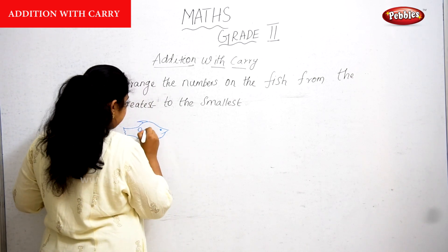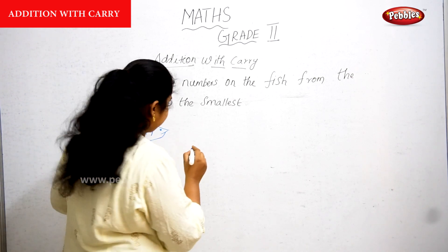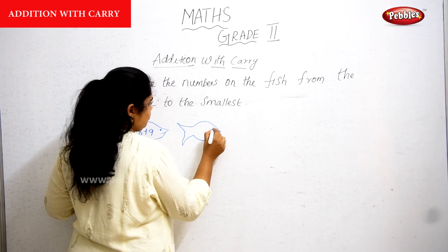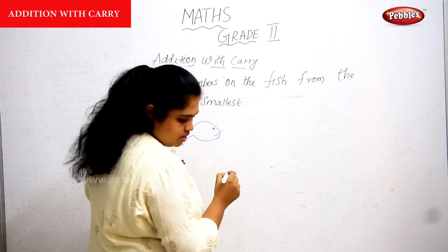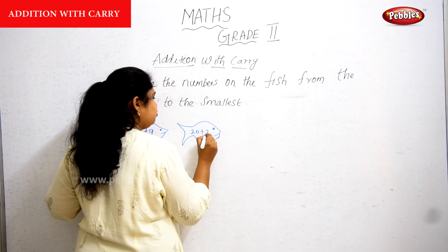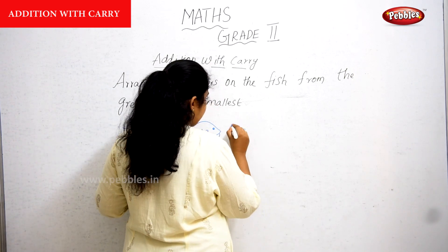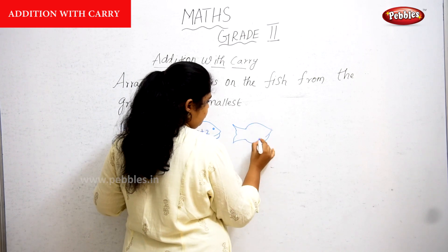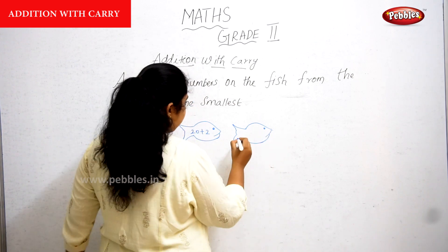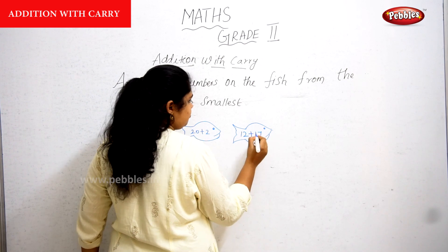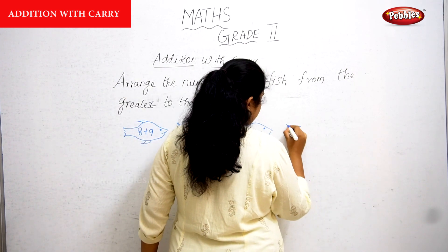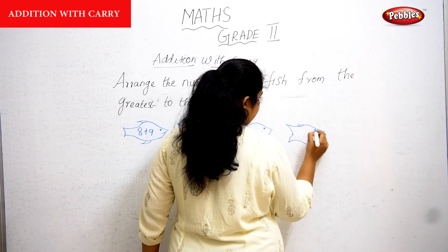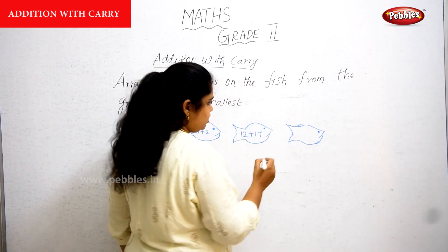The four addition problems on the fish are: eight plus nine, twenty plus two, twelve plus seventeen, and thirteen plus five.